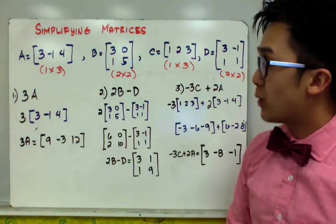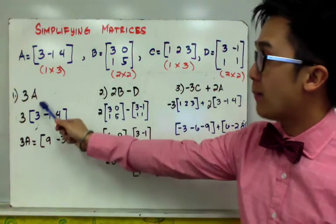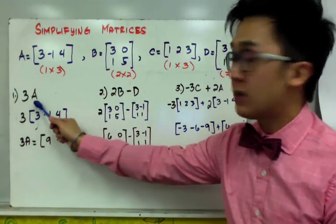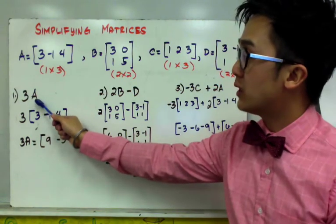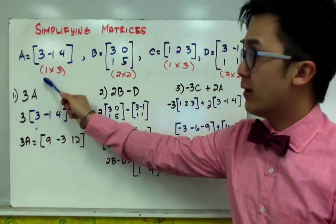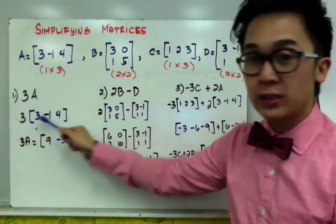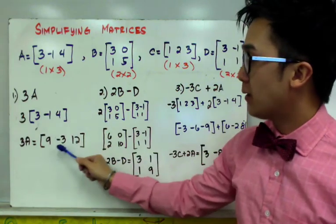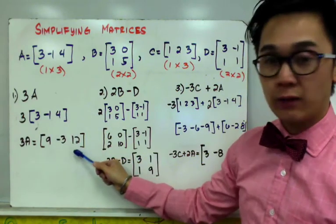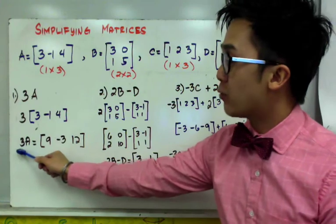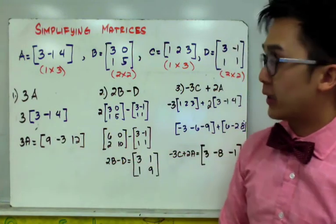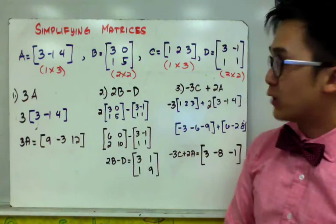Now if we're going to perform a scalar multiplication, for example number 1, which is 3A, all we need to do is to distribute 3 to our matrix A. So matrix A is 3, negative 1, and 4. Distributing 3 to each of the entry will have 9, minus 3, and 12. So this is our 3A by scalar multiplication, which is another 1 by 3 matrix.